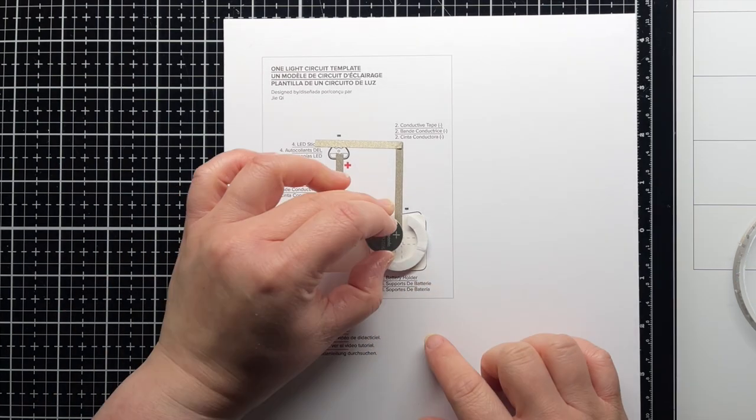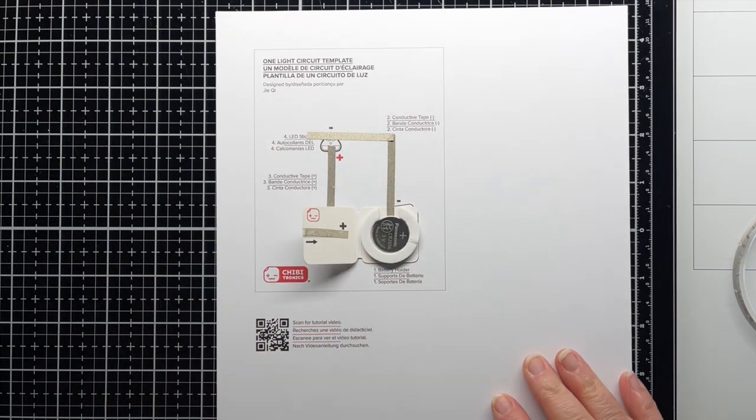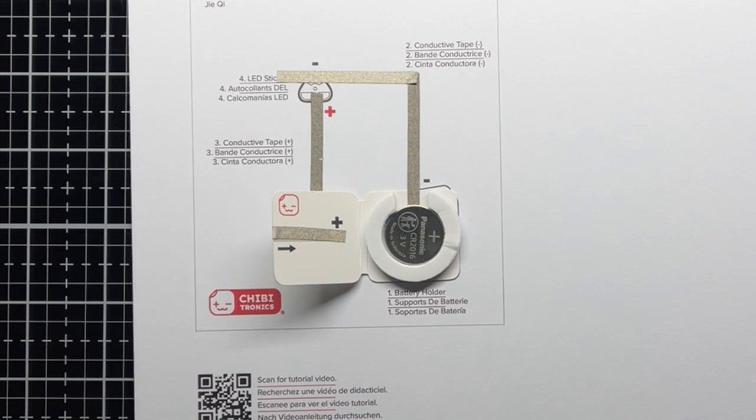Open your battery holder and place a 3V coin battery in the holder with the positive side facing up. We recommend using the CR2032 or CR2016 coin batteries.